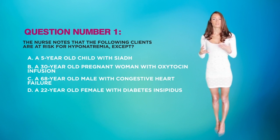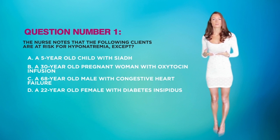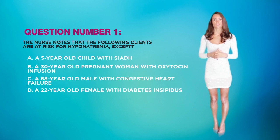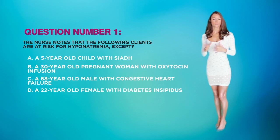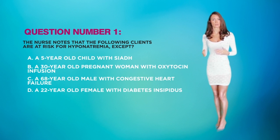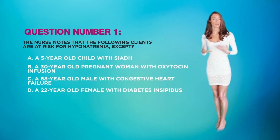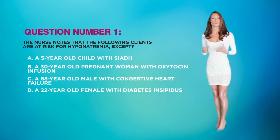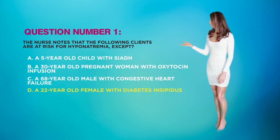In option B, a 30-year-old pregnant woman on an oxytocin infusion — one of the potential side effects of oxytocin is that it can stimulate the kidneys to excrete sodium, potentially causing hyponatremia. In option C, a 68-year-old male with CHF has an inability to excrete extra fluid due to the heart's inability to pump properly, causing fluid overload and dilution. Option D — the client with diabetes insipidus — is actually more prone to excess sodium or hypernatremia rather than hyponatremia, making D the correct answer.